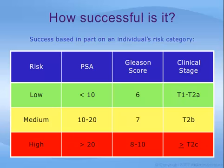As shown in this table, a low-risk cancer is indicated by a PSA of under 10, a Gleason score of 6, and a stage of T1 or T2A. A medium risk cancer is indicated by a PSA of 10 to 20, or a Gleason score of 7, or a stage of T2B. Finally, a high risk cancer is indicated by a PSA of greater than 20, or a Gleason score of 8 to 10, or a stage of T2C or greater.